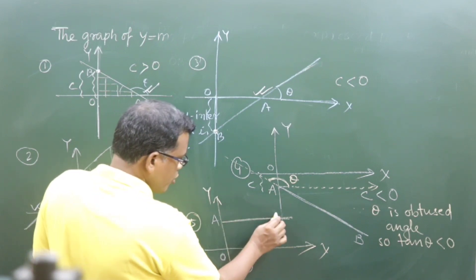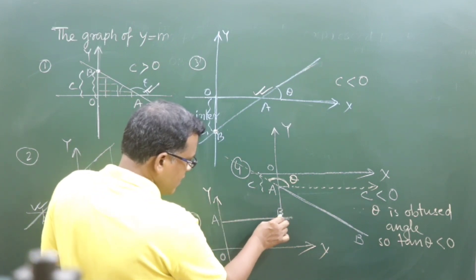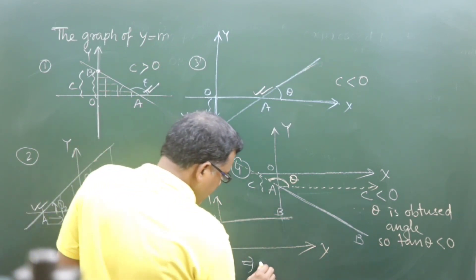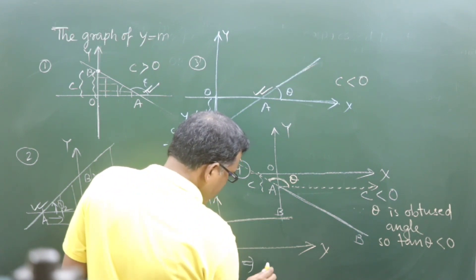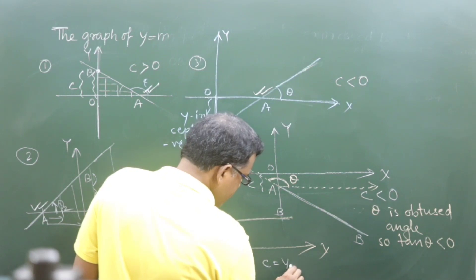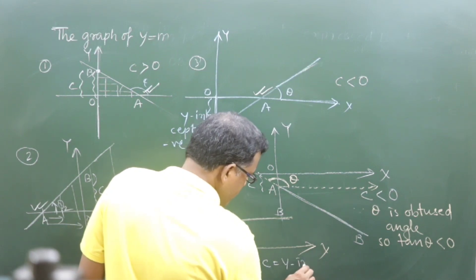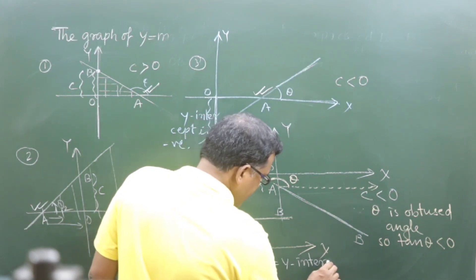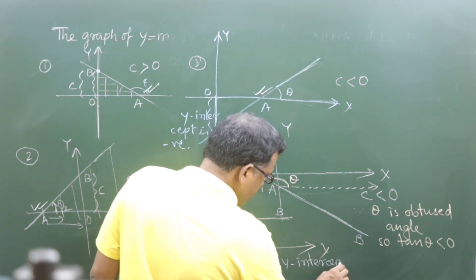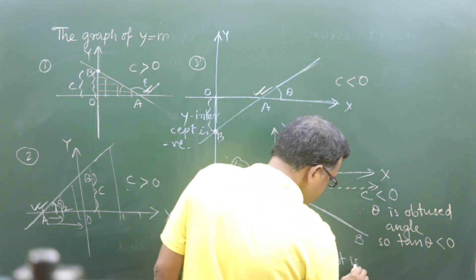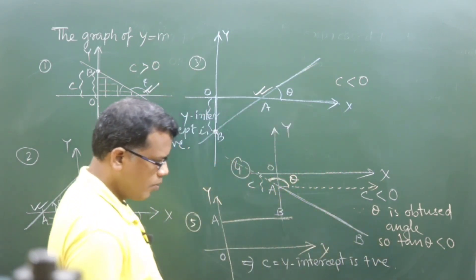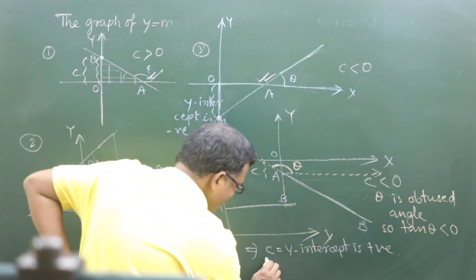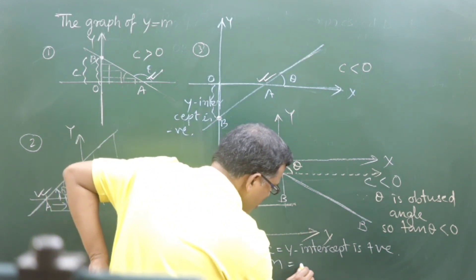If I show the portion of the line such as a, b, then slope is not positive. Y-intercept — yes, y-intercept is positive. And what about slope? Slope is 0.